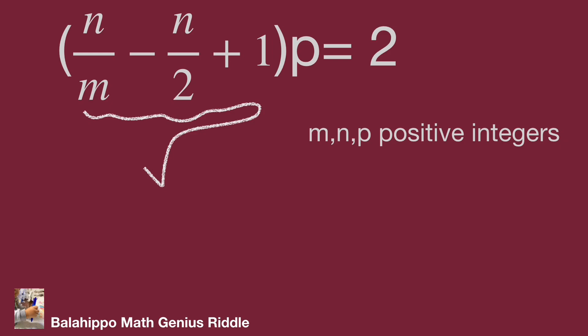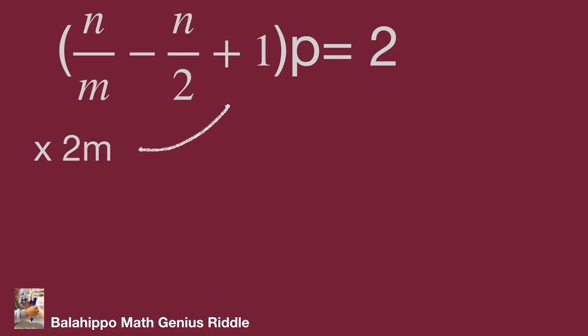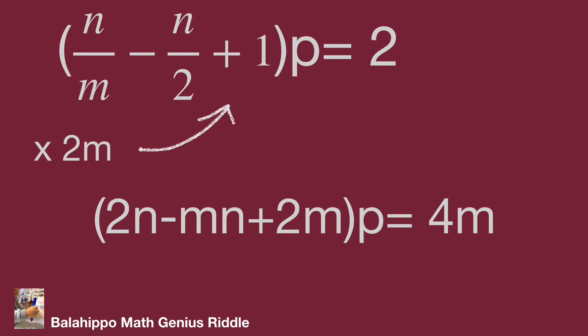That means it's larger than 0. Therefore, multiply 2m into these equations. We get quantity 2n minus mn plus 2m multiply p equal to 4m.